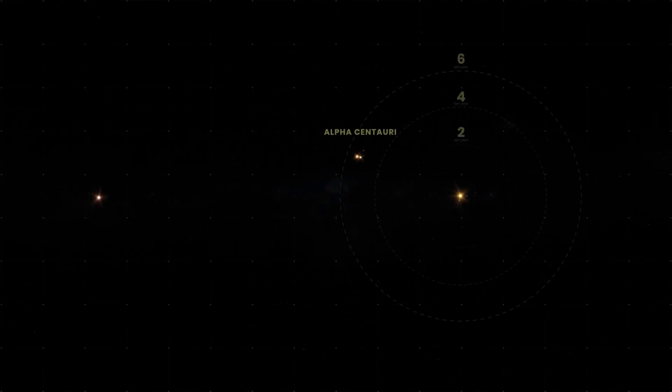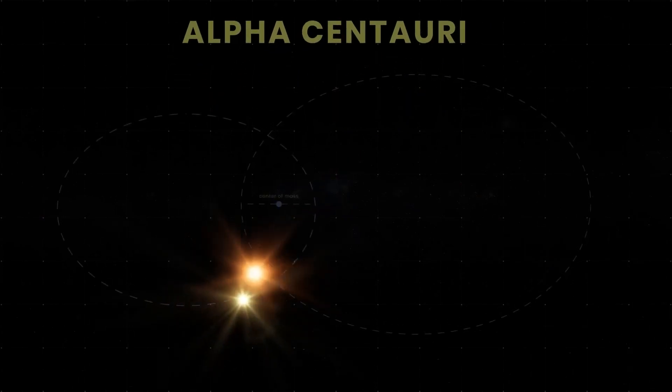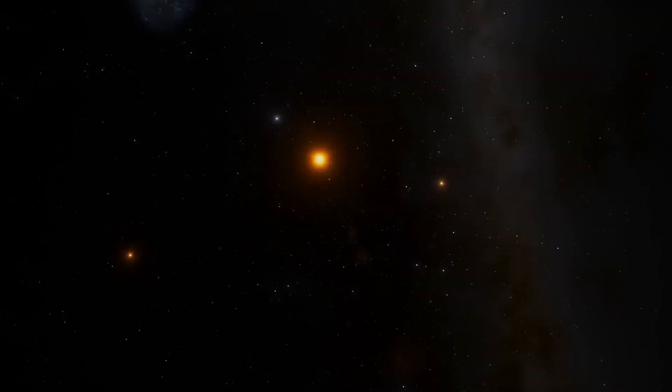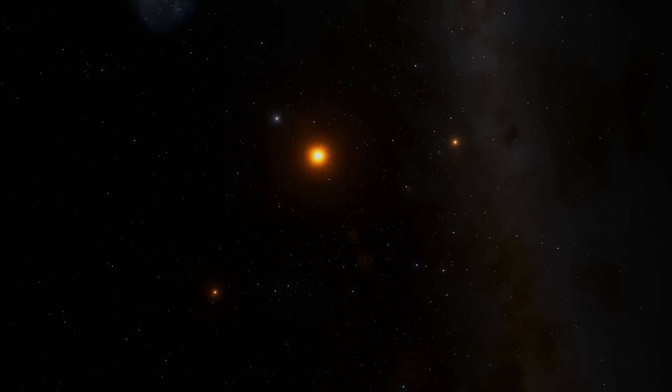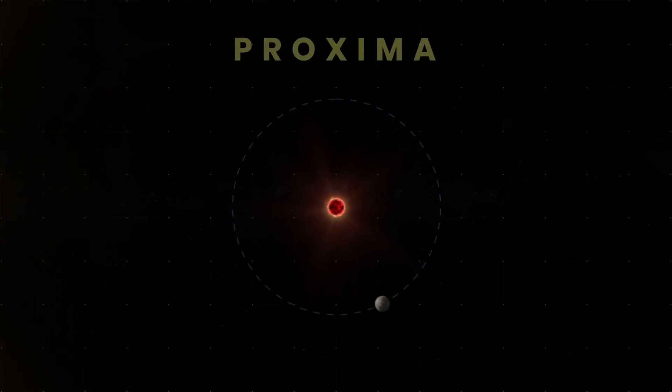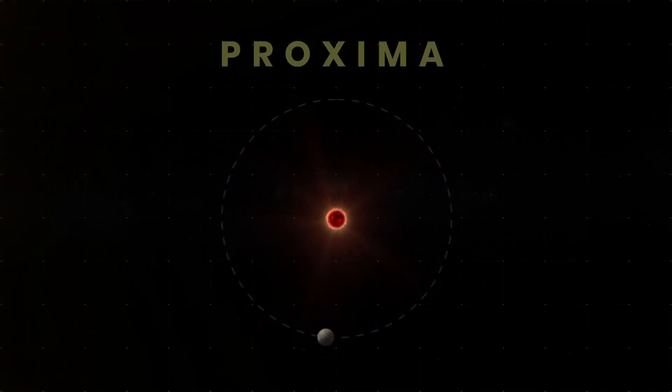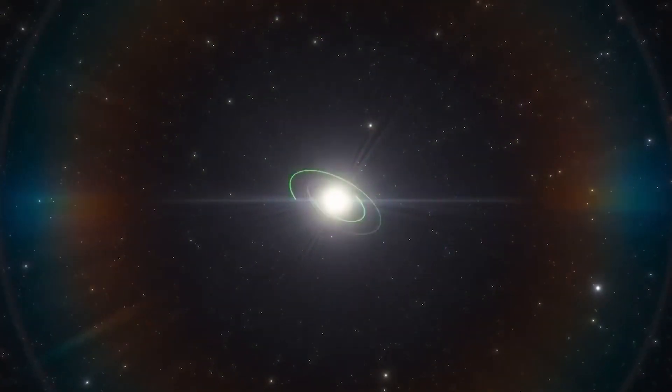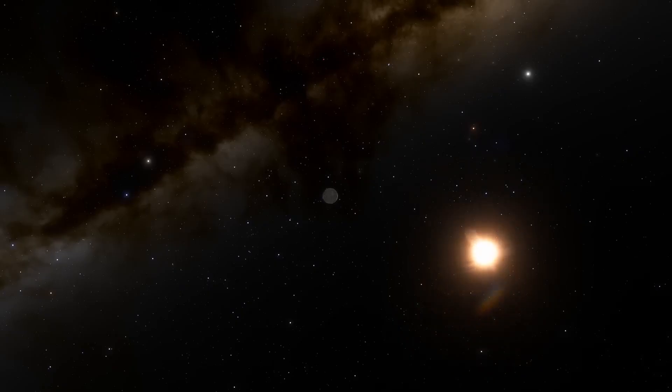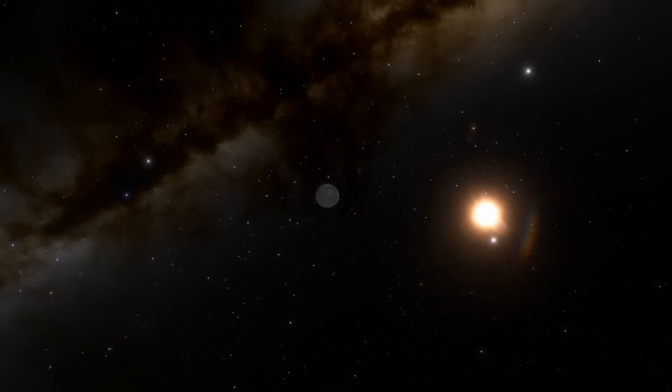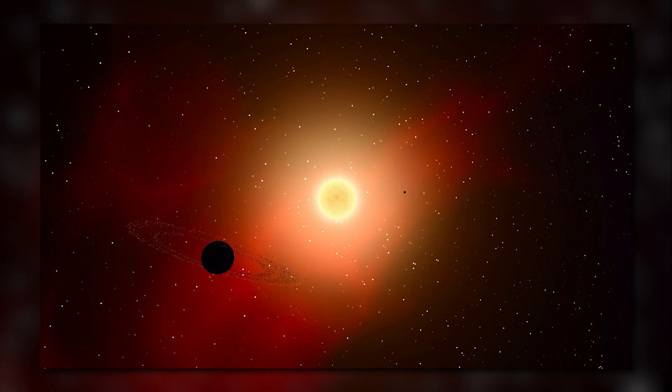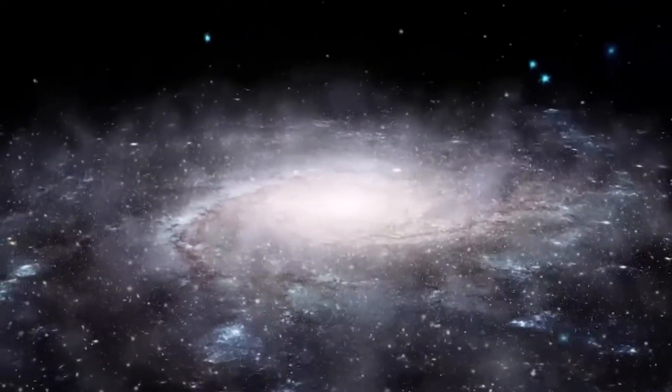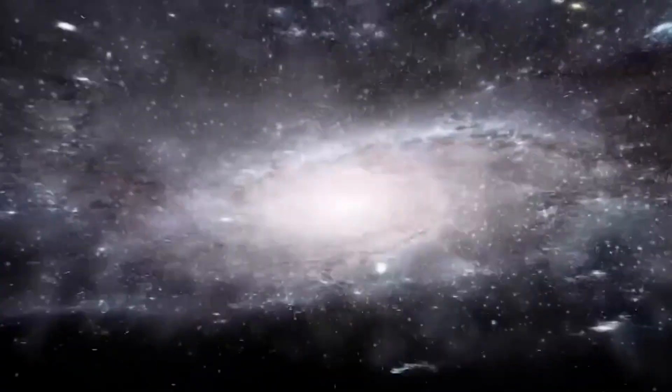The Proxima Centauri system is a triple star system located in the Alpha Centauri star system, which is the closest star system to our own. The system is composed of three stars: Alpha Centauri A, Alpha Centauri B, and Proxima Centauri. Proxima Centauri is the smallest of the three stars with a mass of only about 0.12 solar masses and is a red dwarf star. It has a surface temperature of about 3,050 Kelvin or 2,777 Celsius or 5,030 Fahrenheit and a luminosity that is only about 0.15 percent that of the Sun. It is located about 4.24 light-years away from Earth and is the closest star to our solar system.